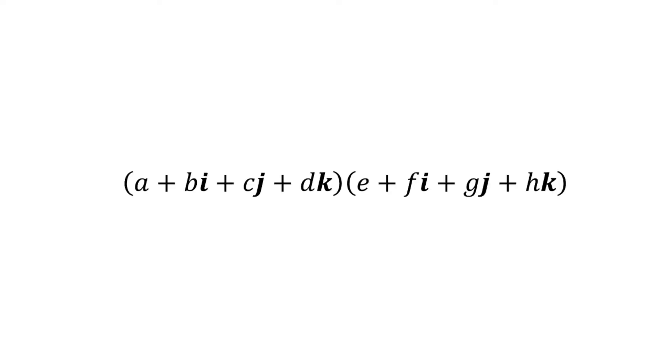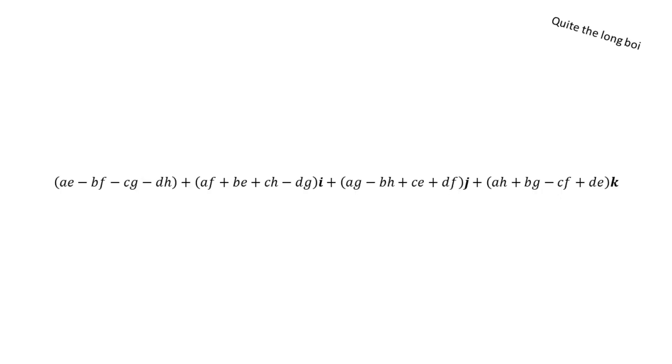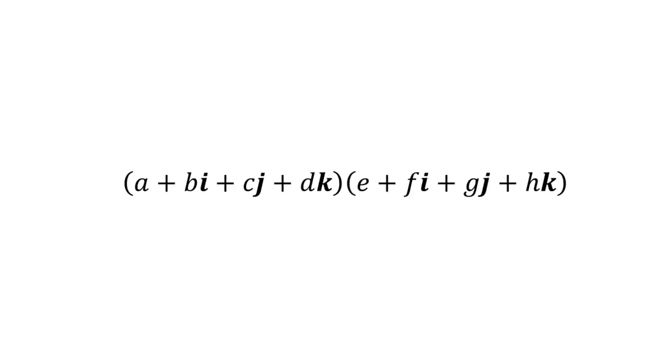So if we expand everything and collect like terms, we get something like this, which is itself another quaternion. It is a real part, and three imaginary parts. This is all rather oversimplified, and because of the time limit of this video, I'm only scratching the surface. Again, please check out some of the videos in the description. I can't recommend them enough.